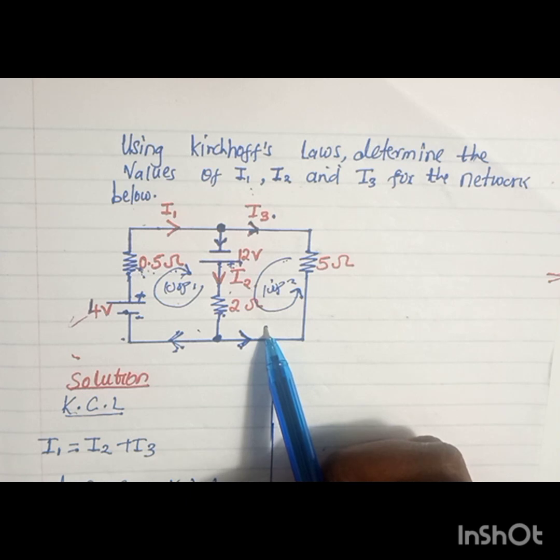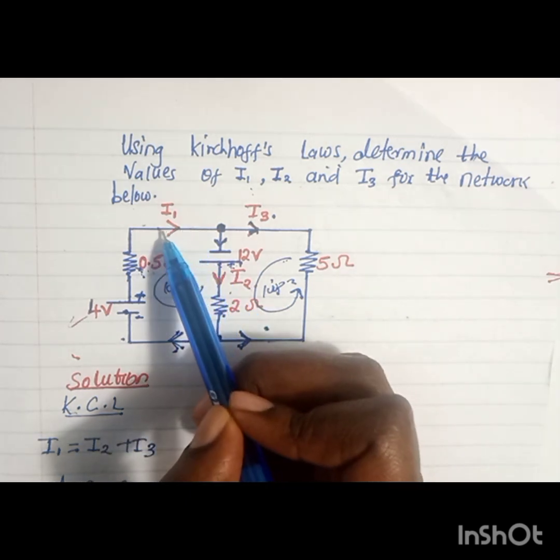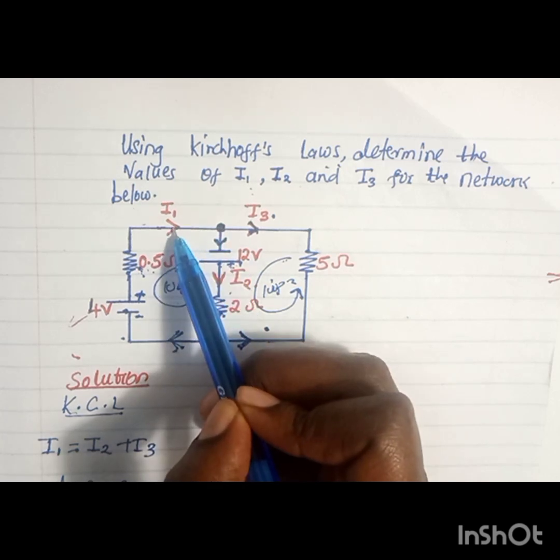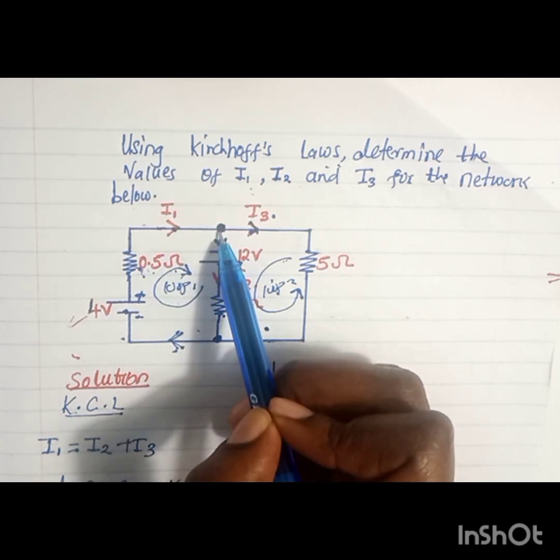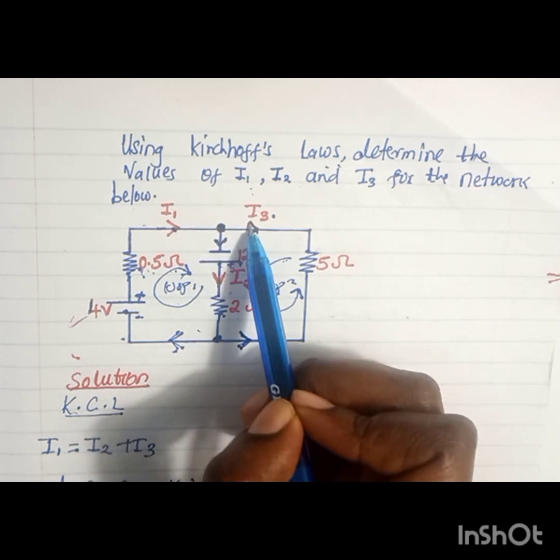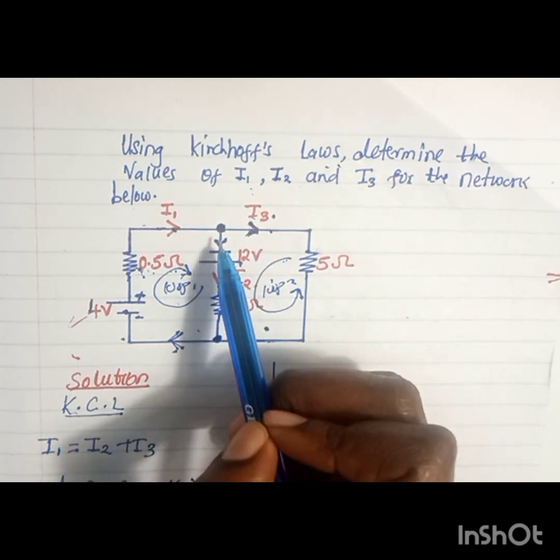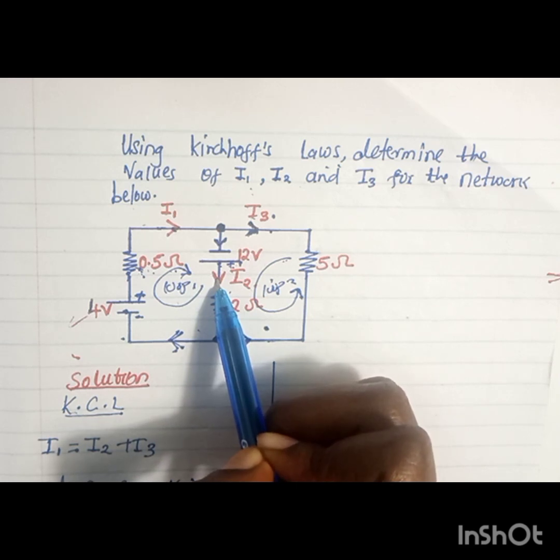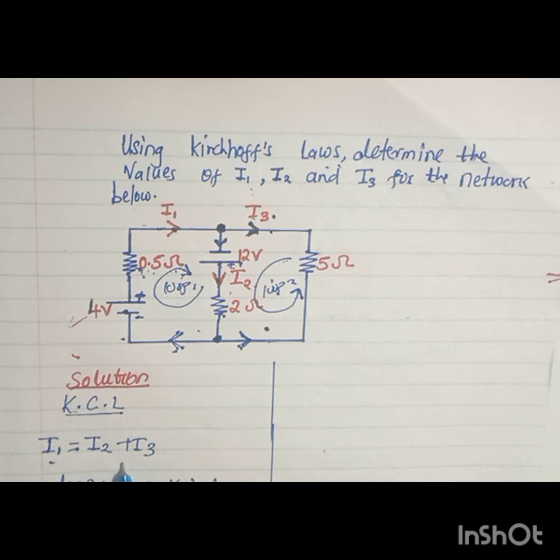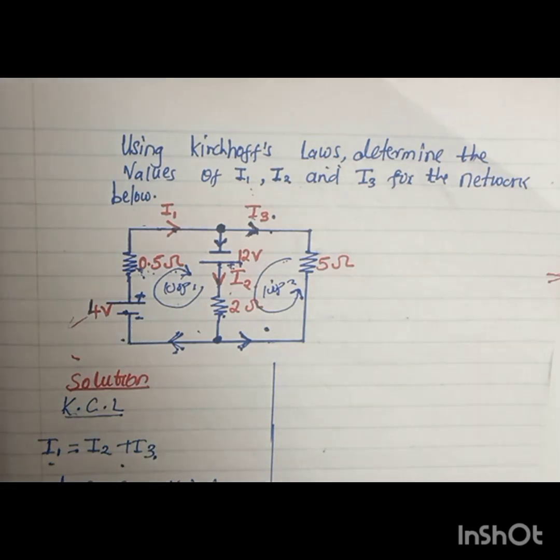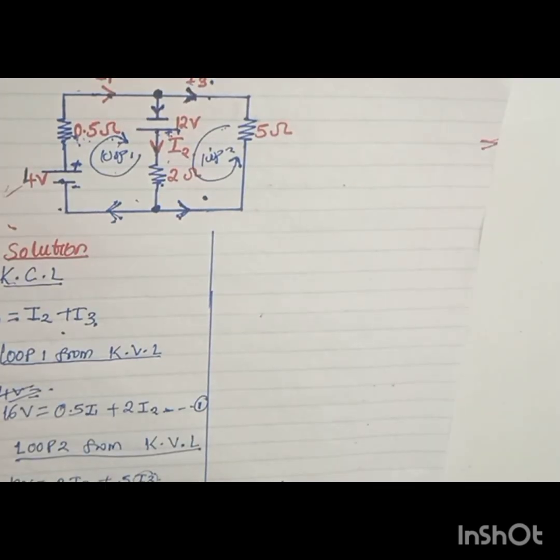From Kirchhoff's current law, you find that the total current coming towards this junction, I1, should be equal to the total current leaving the same junction. We have I3 leaving this junction and I2 leaving this junction, meaning that from our KCL, I1 equals I2 plus I3. That is always the first thing that you should do to solve this kind of network.